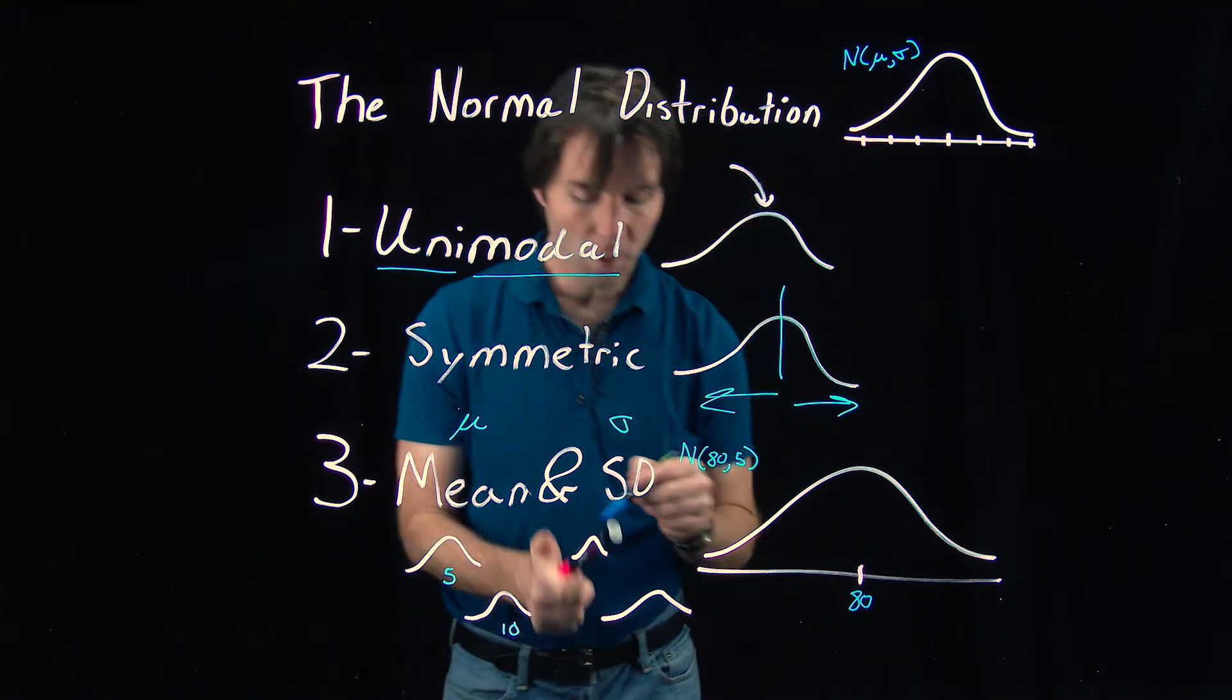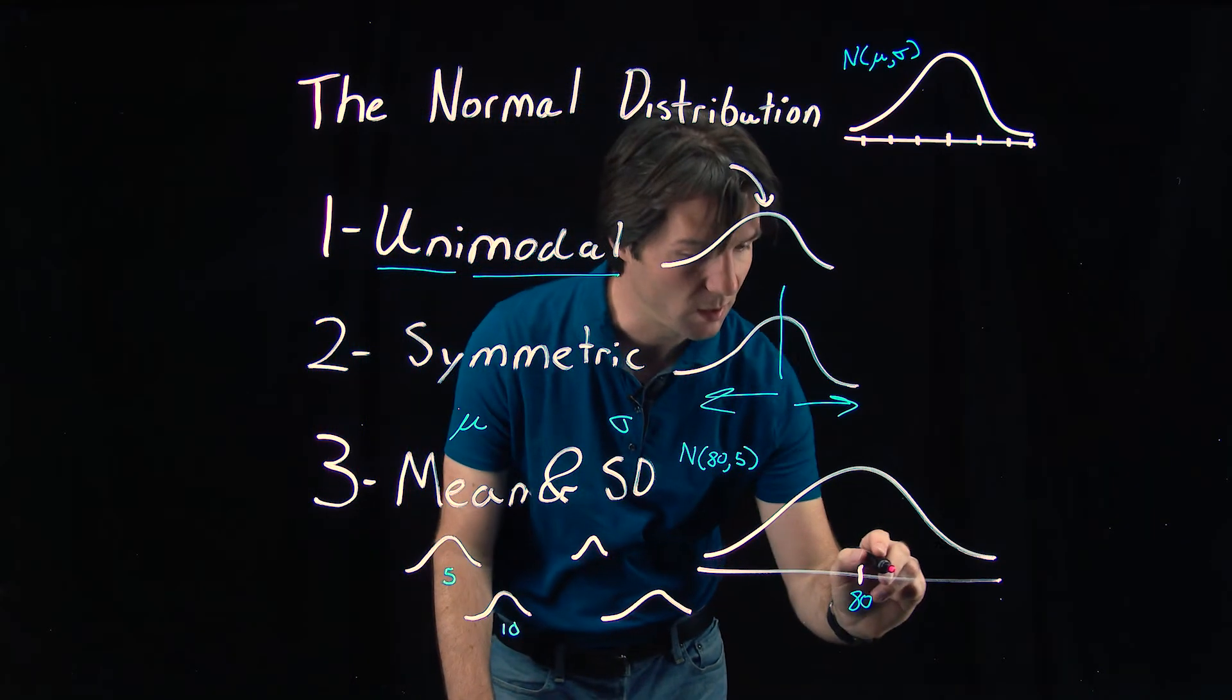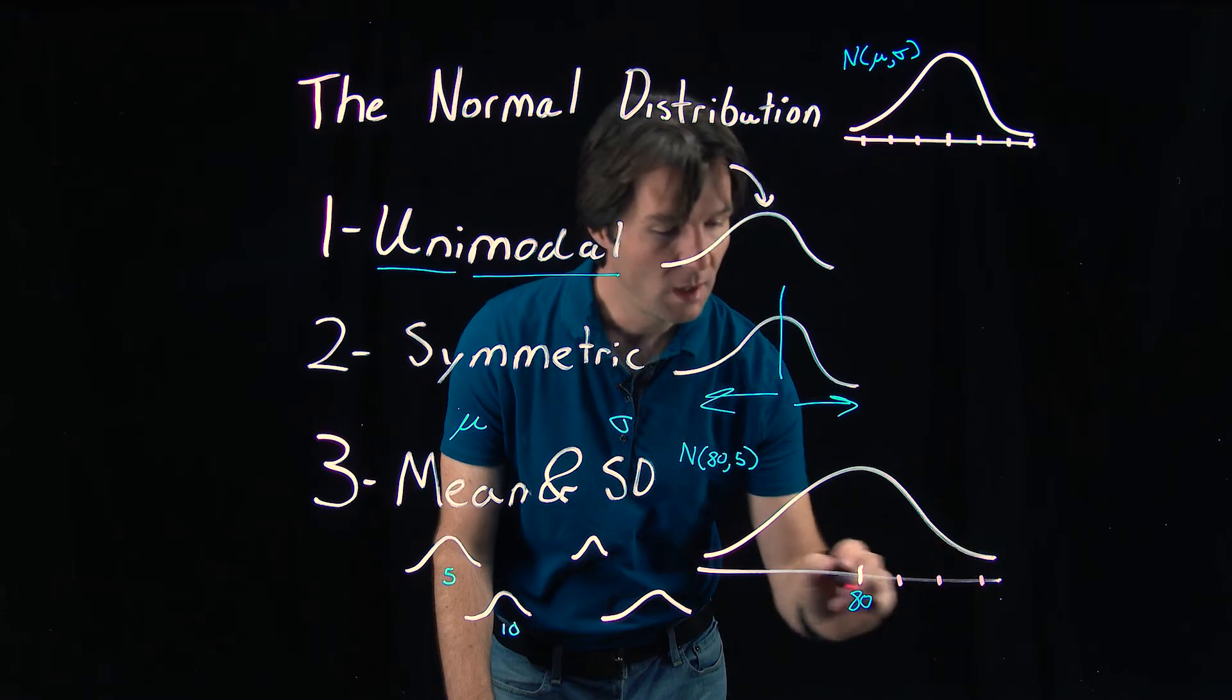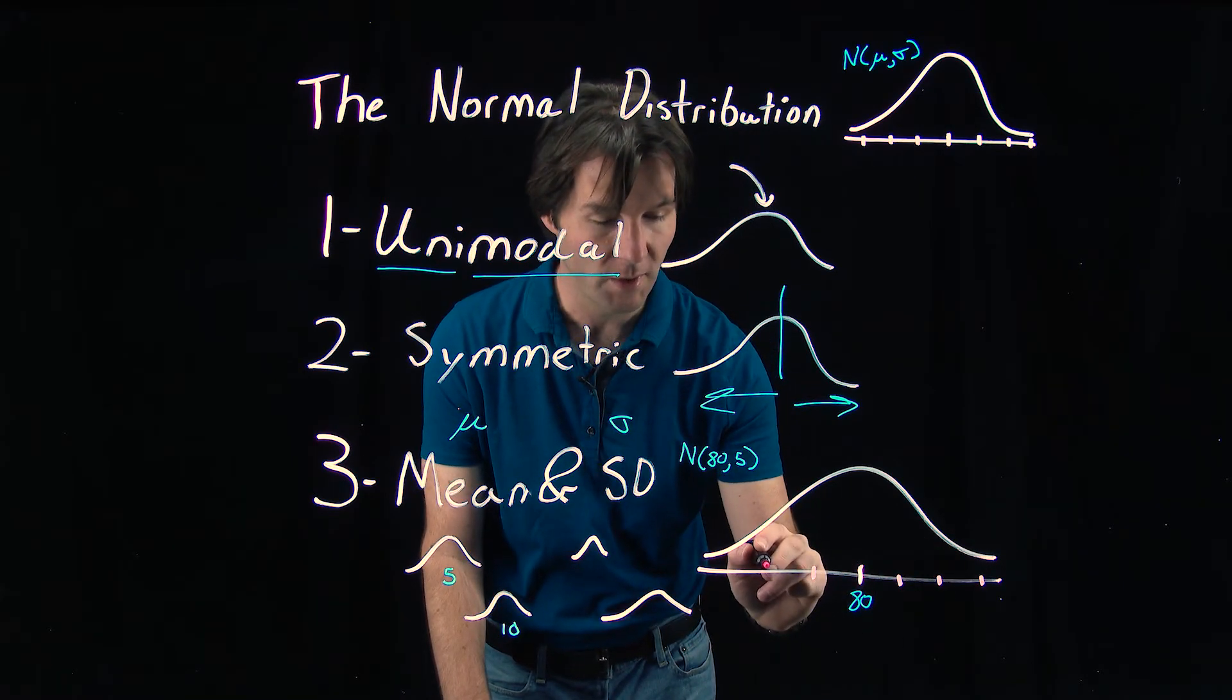80. Now what we'll do is we'll go up and down three standard deviations: one, two, three. And this contains most of the data on the curve.